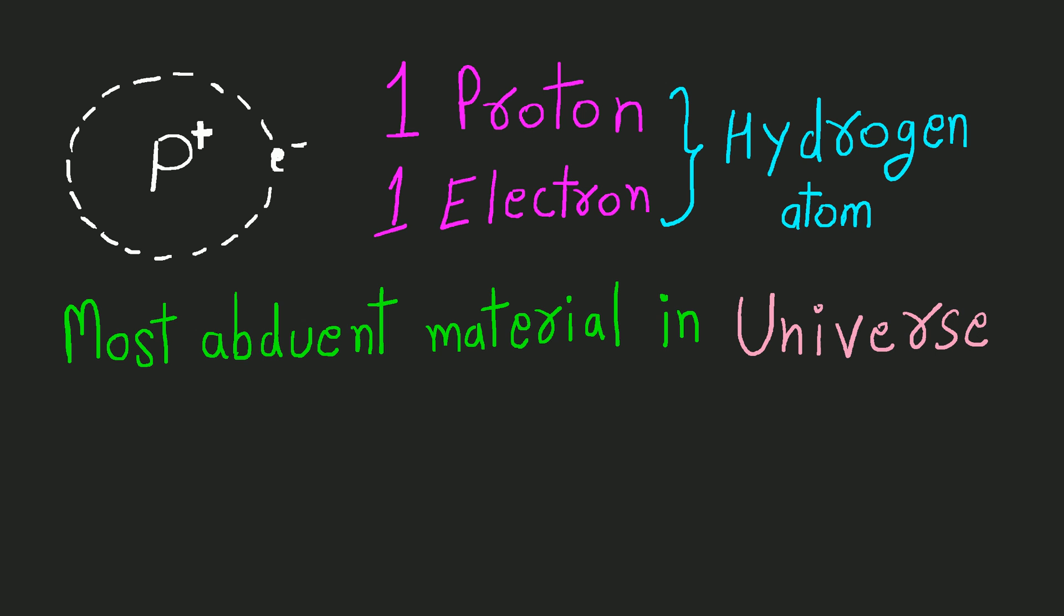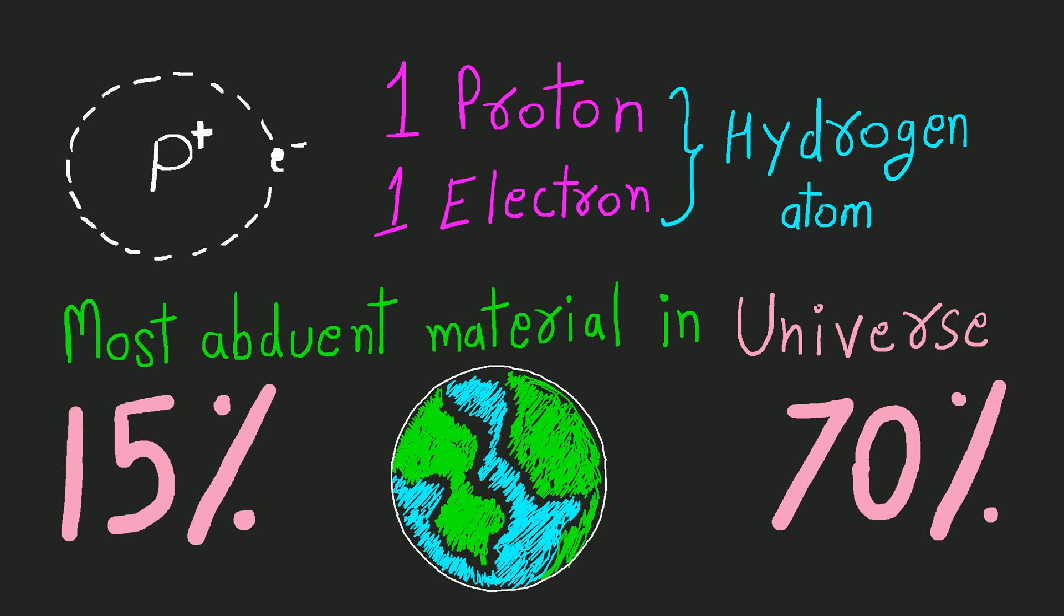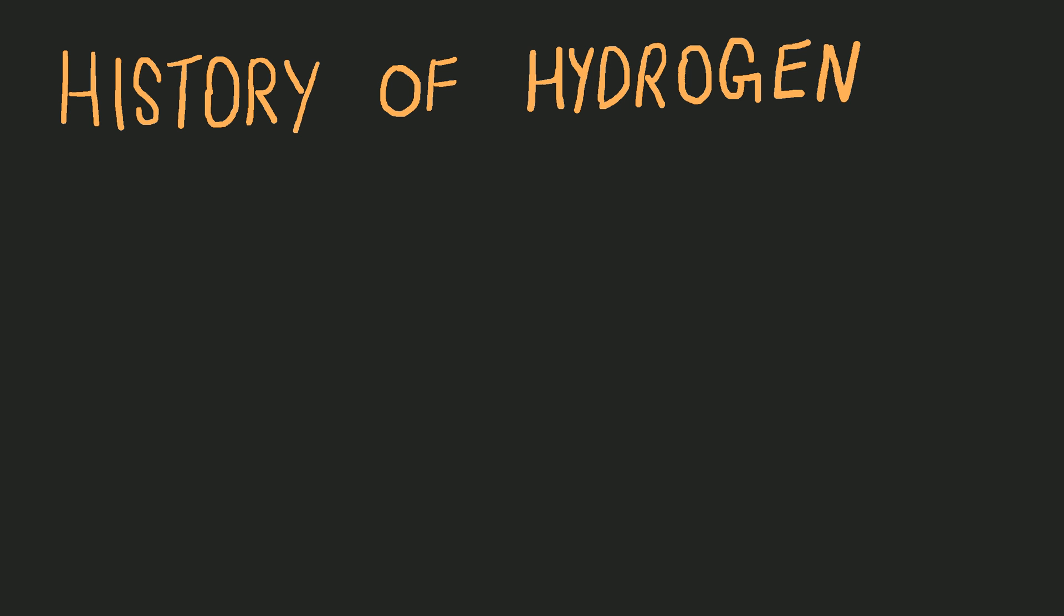Hydrogen is the most abundant material in the universe, which is 70%, and on Earth it's 15%. Let's talk about the history of hydrogen.